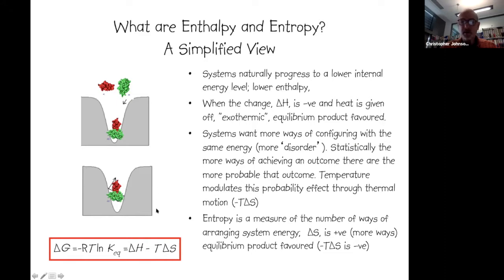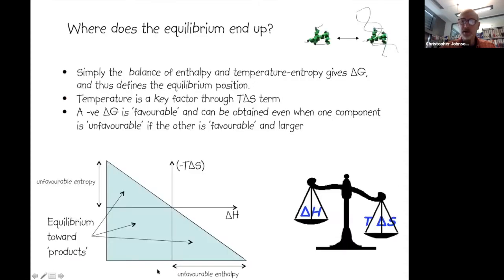The more ways there are of achieving a particular outcome, the more probable that outcome is. Temperature modulates this probability through Brownian motion, which is why temperature appears with the entropy term in ΔG = ΔH − TΔS. In the energy landscape schematics, enthalpy is the vertical dimension and entropy the horizontal dimension. The biological equilibrium position is simply the balance of enthalpy and temperature times entropy.